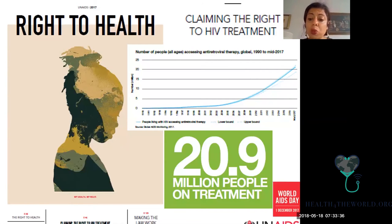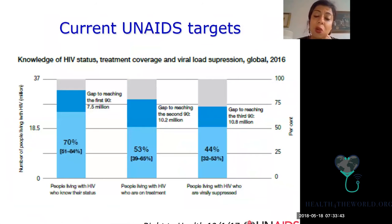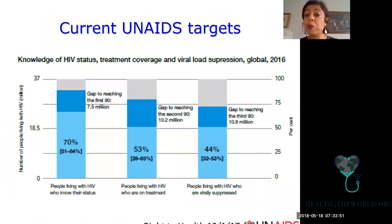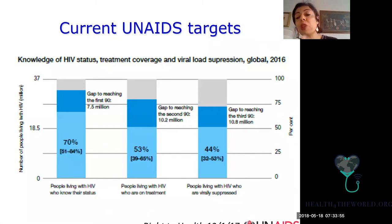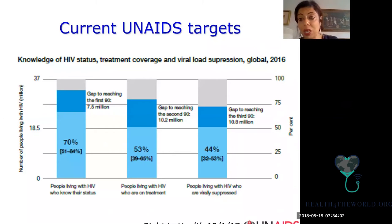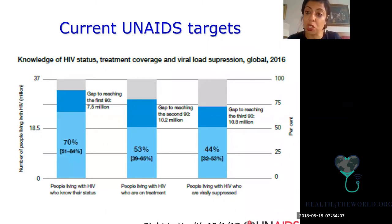Where we are worldwide — this is data put out by UNAIDS — right now, as of the last statistic, 70% of people worldwide who have HIV have been tested for HIV. Of those, 53% are given antiretroviral therapy. And of those, 44% worldwide have achieved virologic suppression. So unfortunately, we're nowhere near the 73% virologic suppression rates that we need to reach by 2020 to achieve the UNAIDS 90-90-90 goal targets.